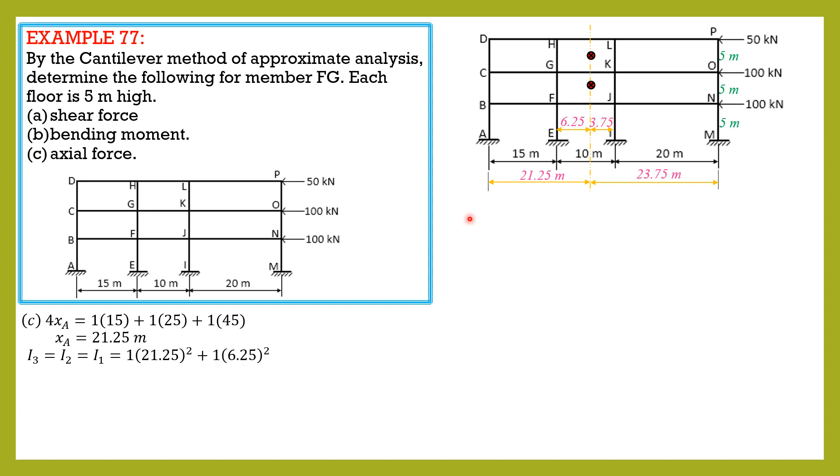Summation of area distance squared. For column at A, area is 1, then distance 21.25 squared. Column at B, 1 times 6.25 squared plus 1 times 3.75 squared plus 1 times 23.75 squared. So the moment of inertia is equal to 1068.75 units to the fourth.